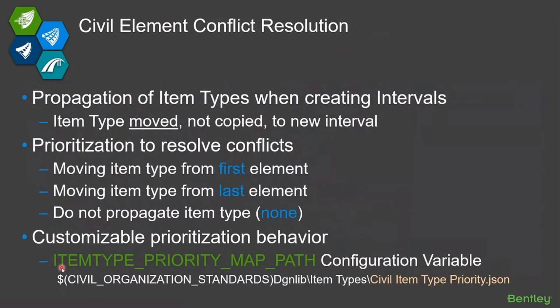To understand what happens when we propagate item types, given the way civil geometry works: if you had two lines, and the first line was a Type A curve and the second line was a Type B curve, and then you complex those two together so they become one element, what item type should go on that element — is it the Type A or is it the Type B?